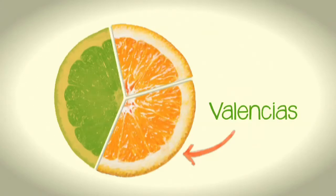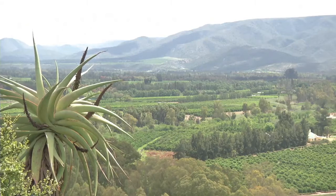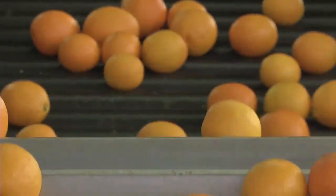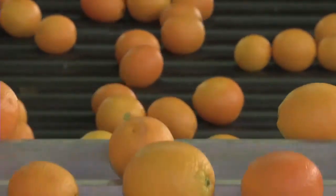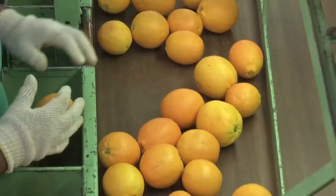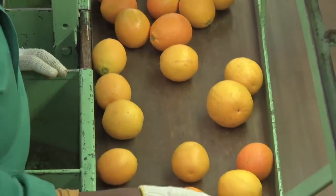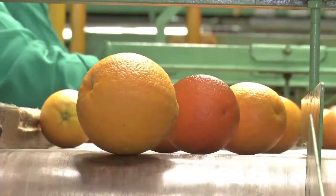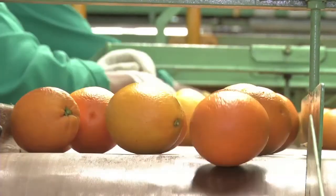Valencias alone account for 44% of citrus exported from Southern Africa, with 40% of hectares under citrus being used to produce Valencia cultivars. The fruit is medium to large, with a nice orange rind that is not too thick and has a smooth, finely pebbled texture. Valencias have a relatively high acid content and a high sugar content, which means it has a lot of flavour and is delicious. It also has a high juice percentage.